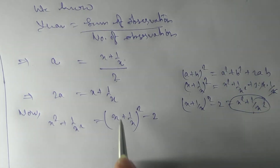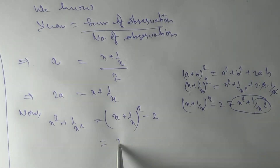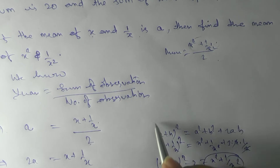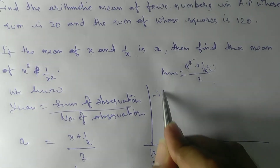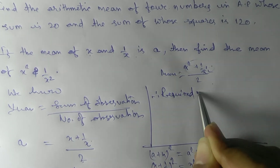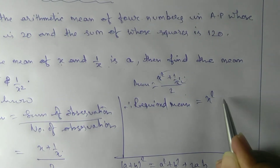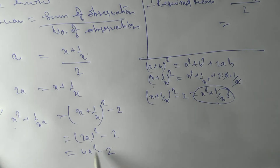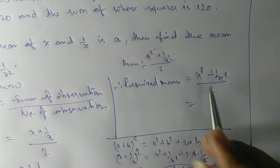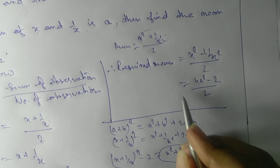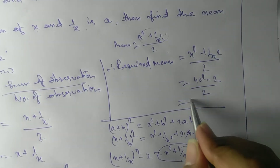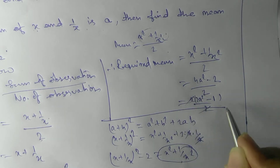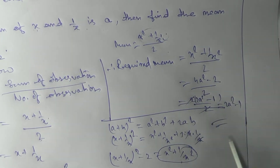Now substitute: x + 1/x = 2a (from the given condition), so x² + 1/x² = (2a)² − 2 = 4a² − 2. Therefore the required mean = (x² + 1/x²) / 2 = (4a² − 2) / 2. Taking 2 as common and cancelling, we get 2a² − 1. This is our mean.